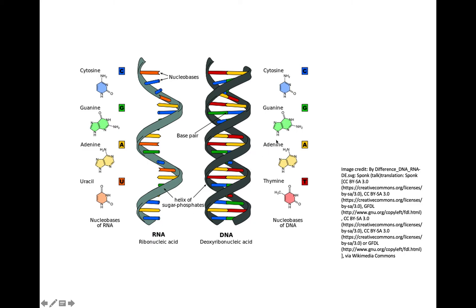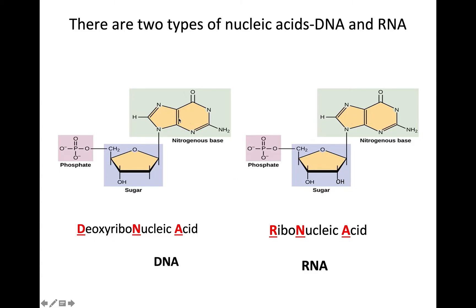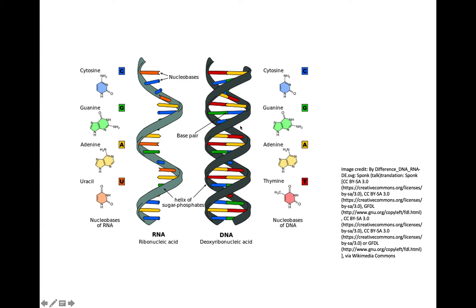Now let's talk about similarities and differences. Both DNA and RNA are similar in that their monomer is a nucleotide with three parts. What are the differences? RNA is single-stranded, while DNA is double-stranded — meaning there are two backbones. The reason these two strands are held together is because the nitrogenous bases shown here hydrogen bond with one another, so the two strands are held together by hydrogen bonds.